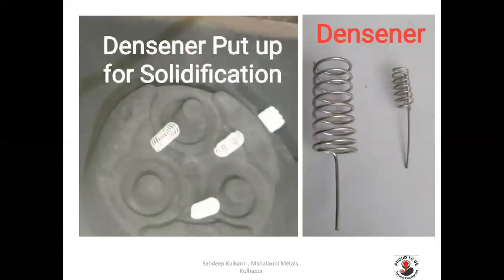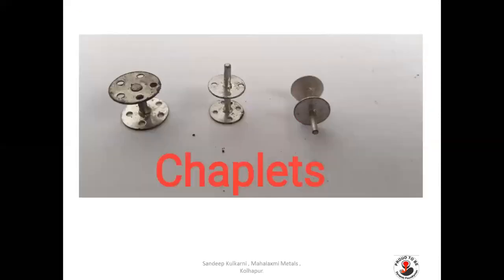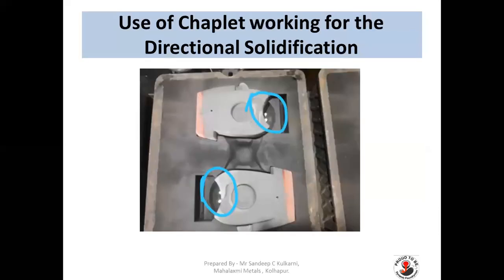Densers are used here — you can see densers used for starting solidification early, and a picture of a mold using densers for directional solidification. Chaplets also help in starting solidification early and shifting the shrinkage defect from one area to another. You can see the use of chaplets working for directional solidification.